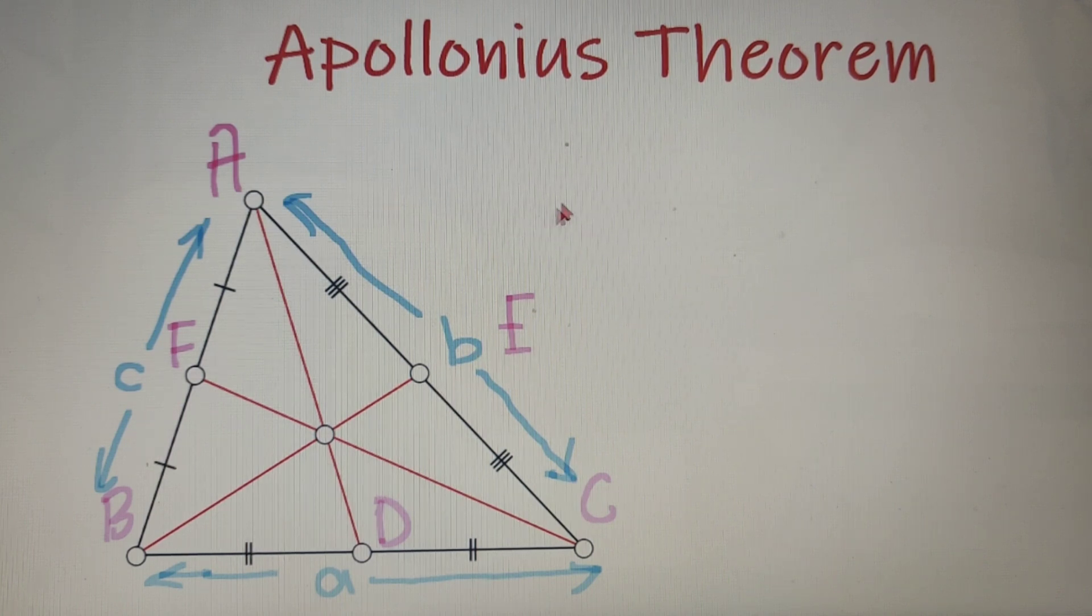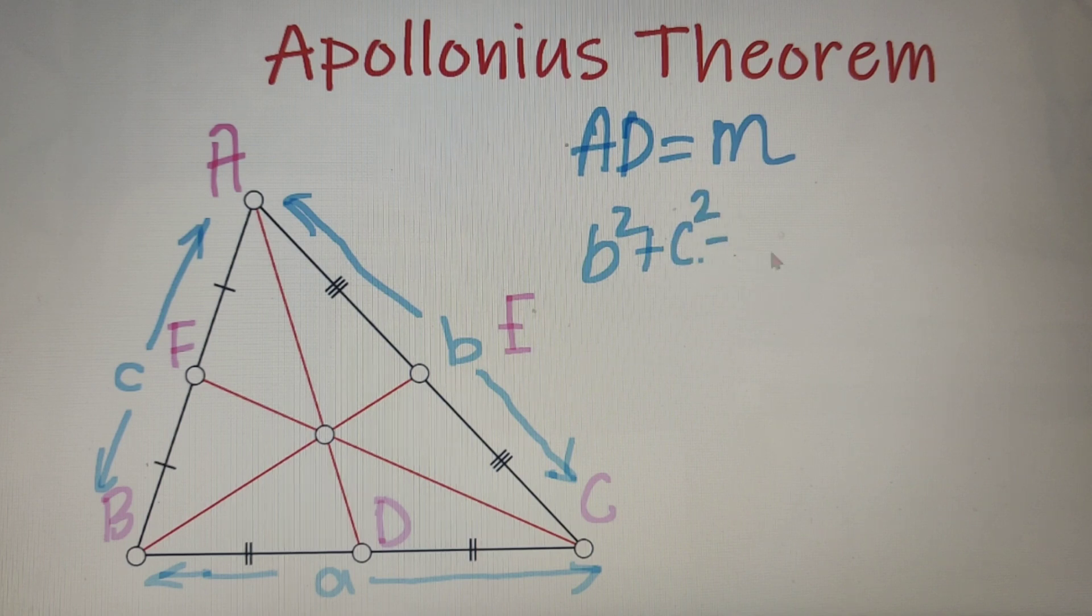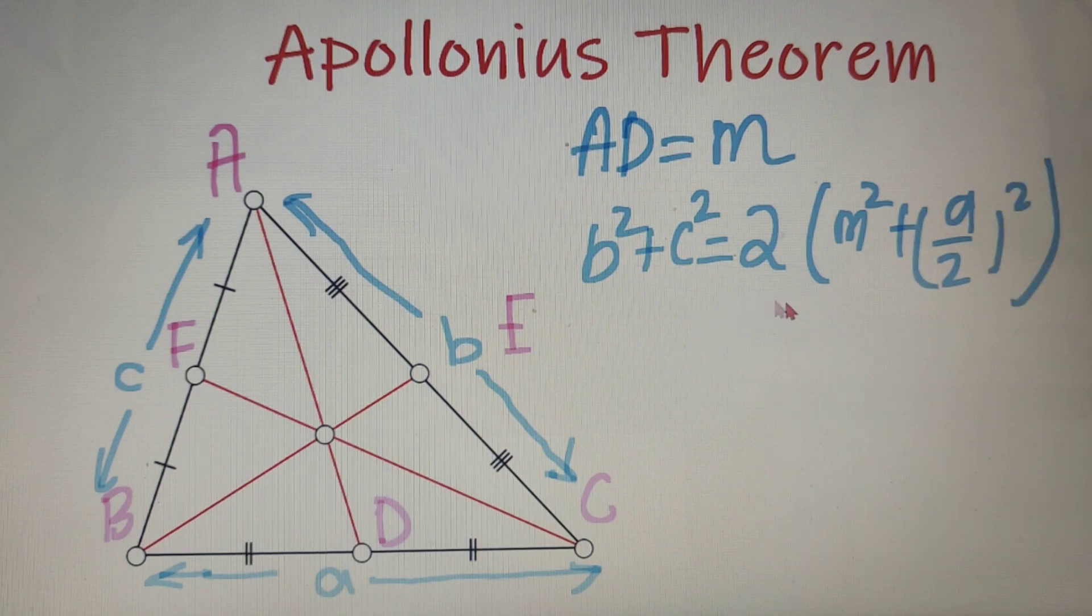And according to the Apollonius theorem, if the length of the median AD is equal to M, then we can say that B square plus C square is equal to twice of M square plus A by 2 whole square. So this equation B square plus C square is equal to two times M square plus A by 2 whole square is known as the Apollonius theorem.